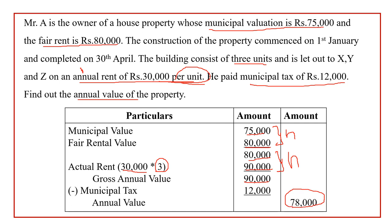The difference between the previous question and this question is: if any information is missing, we skip that value. Not only one — whatever information is missing, we will skip it and work out the answer only with the values that we have.